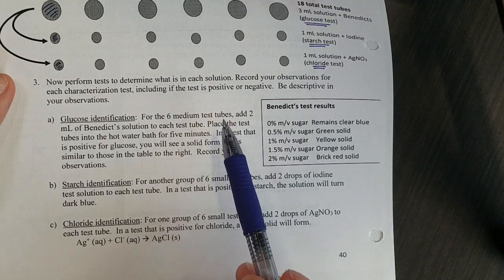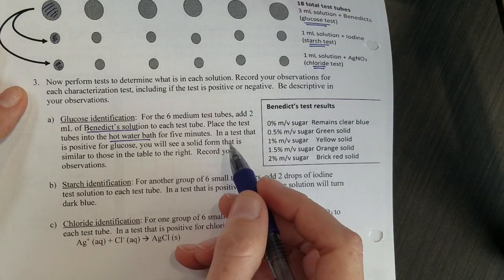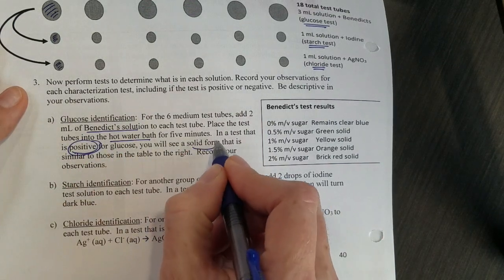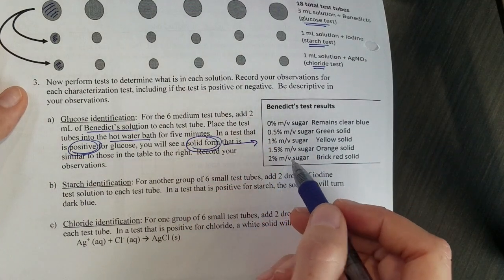Glucose identification: we're going to add Benedict solution and heat them. If it's positive we will see a solid form and here are the colors that you will see. They tell you the percentage of sugar.